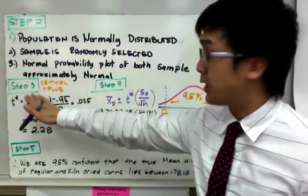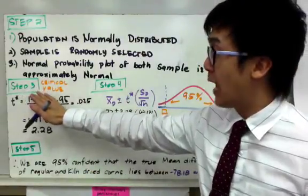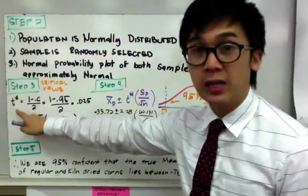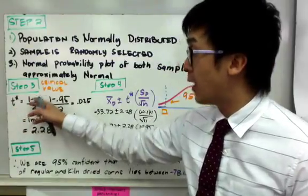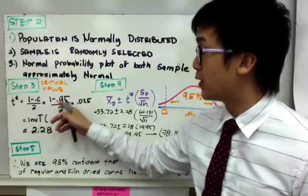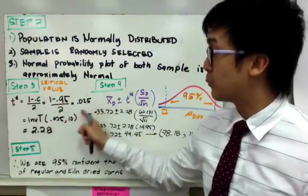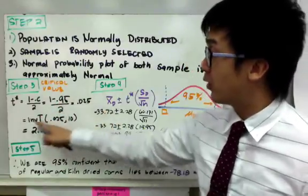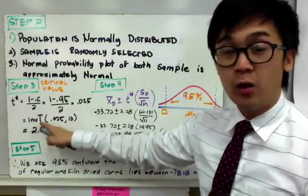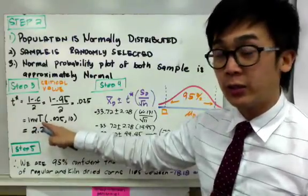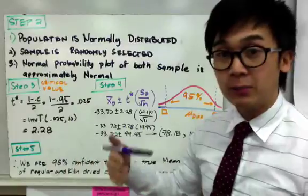So for the third step, we need to find the critical value for our T distribution. So just like what we did before, it's still 1 minus C all over 2, which is 1 minus 0.95, that will give us 0.025.